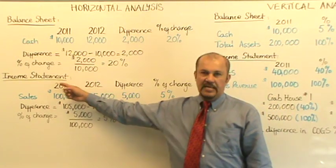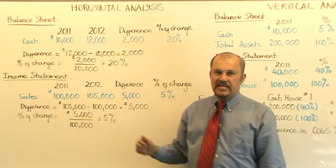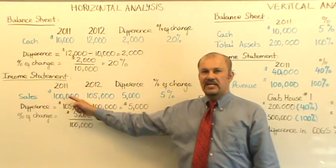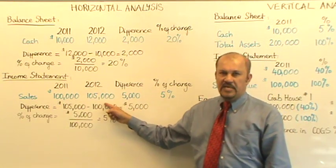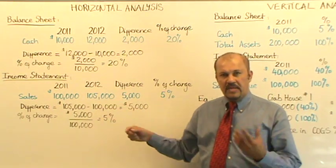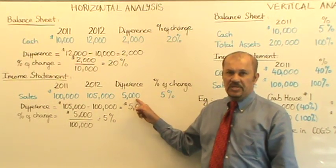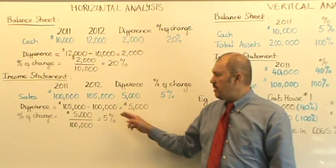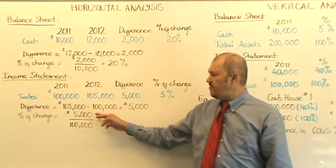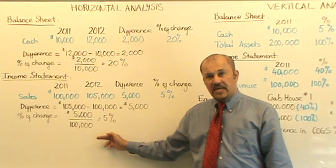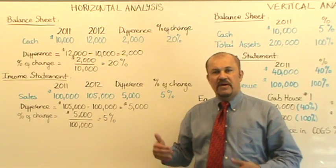Next, let's look at the income statement. I've selected sales as a category to conduct our analysis. In 2011, our sales was $100,000. In 2012, our sales was $105,000. Step one is to calculate the increase or decrease — in this case, an increase of $5,000. Step two is to express this increase as a percentage of the base year. So $5,000 as a percentage of $100,000 is 5%. So our sales has increased by 5%.